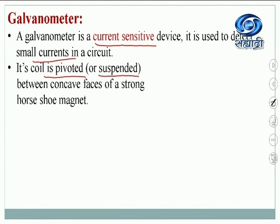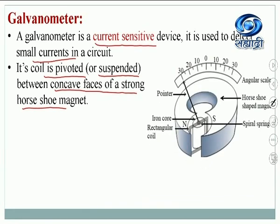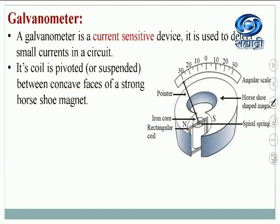The coil is either pivoted or suspended between two concave faces of a strong horseshoe magnet. In the diagram, this is the horseshoe shaped magnet — a full one — with a north pole on one side and a south pole on the other. The concavity of this magnet is what makes it a horseshoe shape.